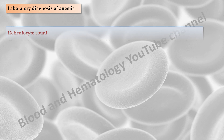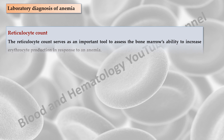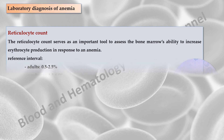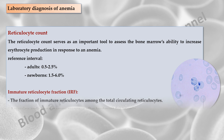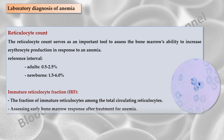The reticulocyte count serves as an important tool to assess the bone marrow's ability to increase erythrocyte production in response to anemia. The adult reference interval for the reticulocyte count is 0.5 to 2.5 percent, expressed as a percentage of the total number of erythrocytes. The newborn reference interval is 1.5 to 6 percent, but these values change to approximately those of an adult within a few weeks after birth. Automated hematology analyzers also determine the immature reticulocyte fraction, which is helpful in assessing early bone marrow response after treatment for anemia.